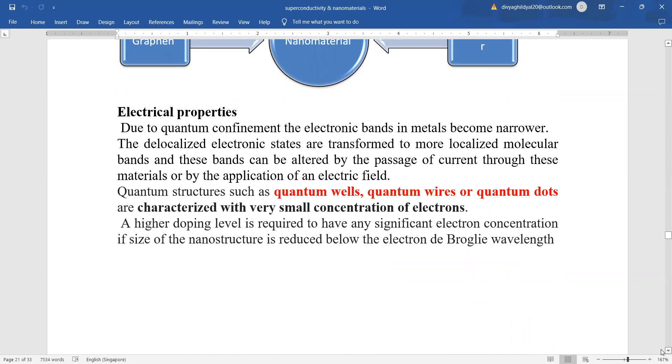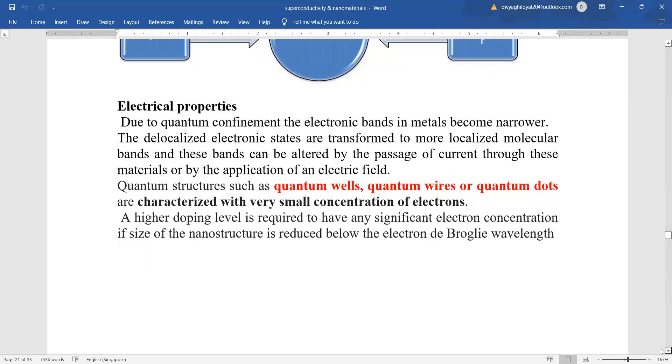Now, quantum structures such as quantum well, quantum wire, or quantum dots are characterized with very small concentration of electrons. A higher doping level will be required to have any significant electron concentration if size of nanostructure is reduced below the electron de Broglie wavelength.